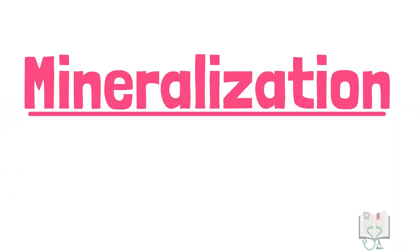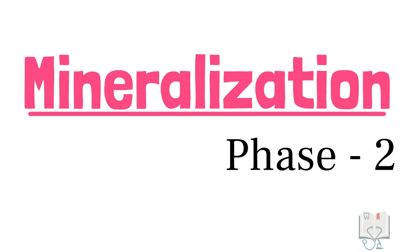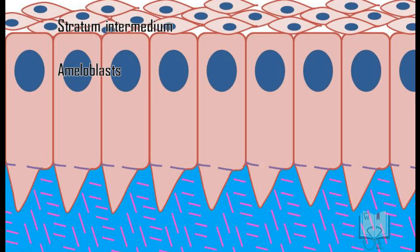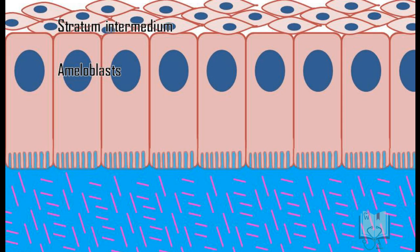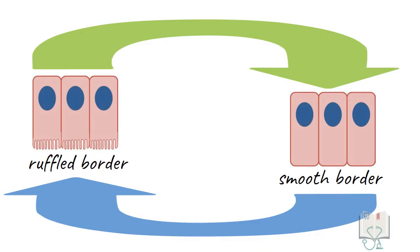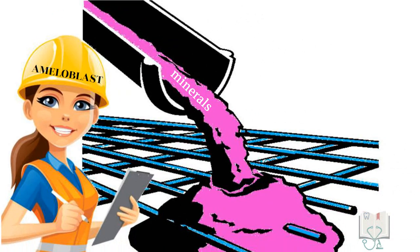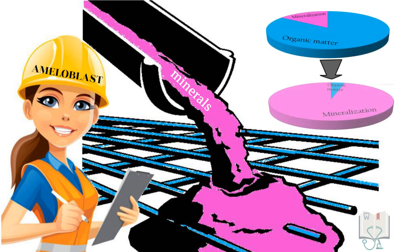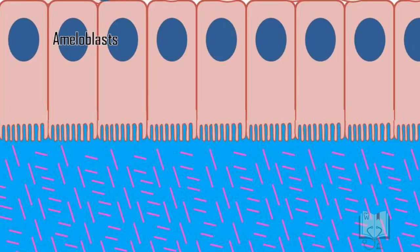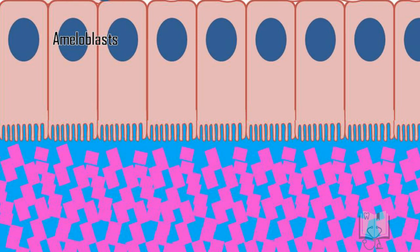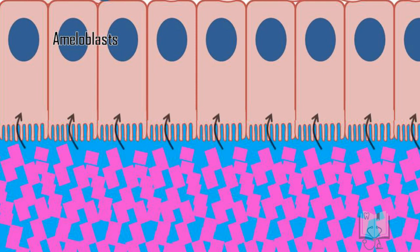In the second phase of mineralization, which occurs in the maturative stage, the ameloblasts lose their Tomes' processes. The distal surface now alternately interchanges between being ruffled and smooth; this interchange is called modulation. In this phase, the ameloblasts have one job: to increase enamel mineralization to the final goal of 96 percent. No new hydroxyapatite crystals are released; instead, ameloblasts secrete minerals which get deposited on the already-present hydroxyapatite crystals, causing their gradual increase in size.